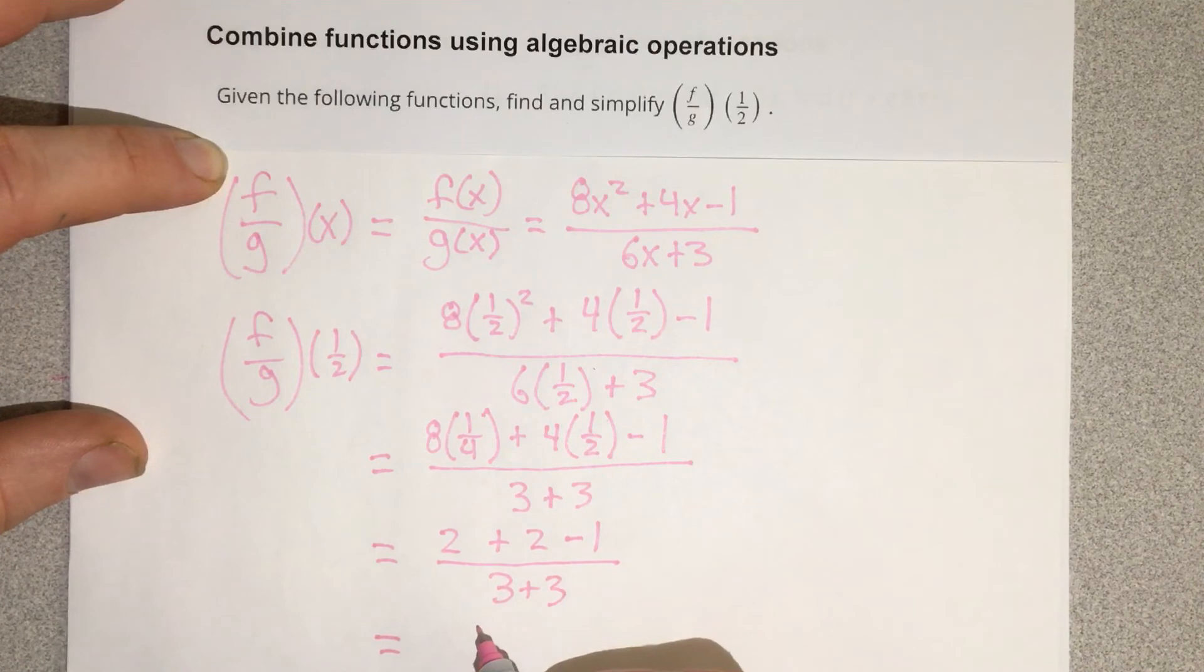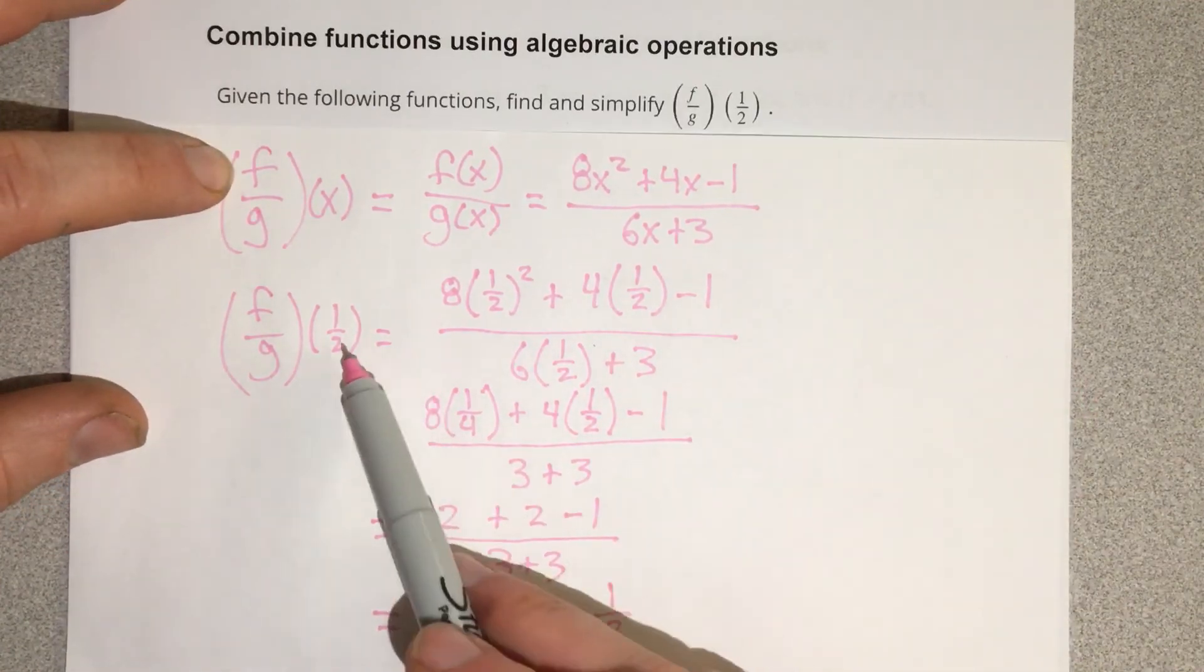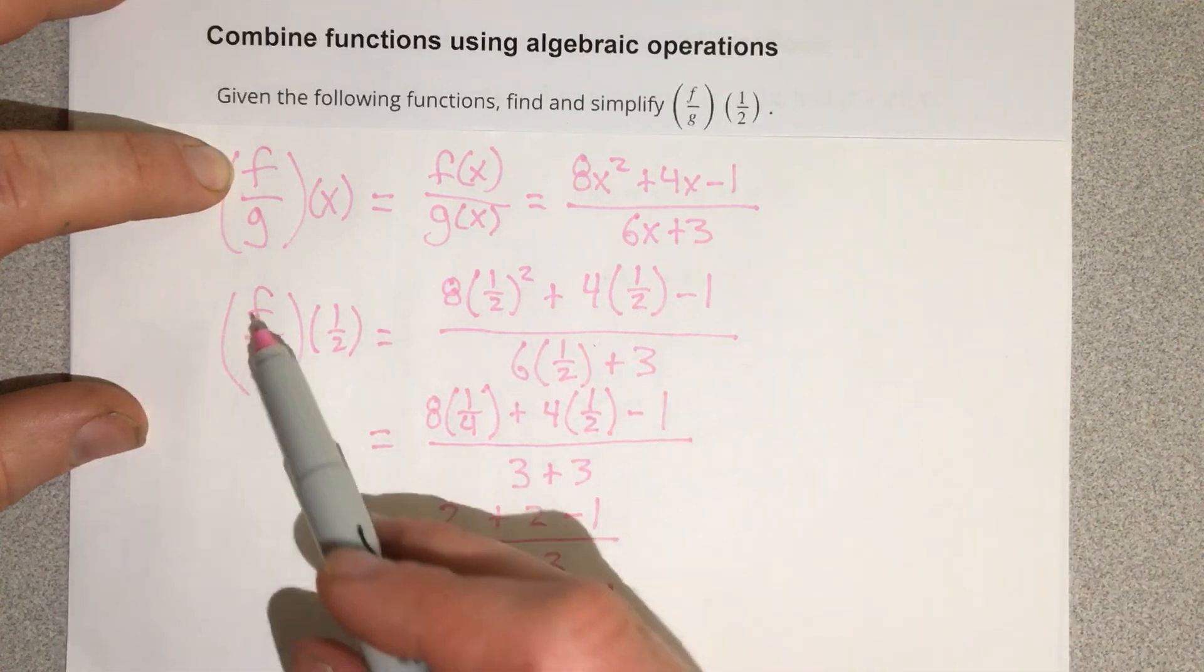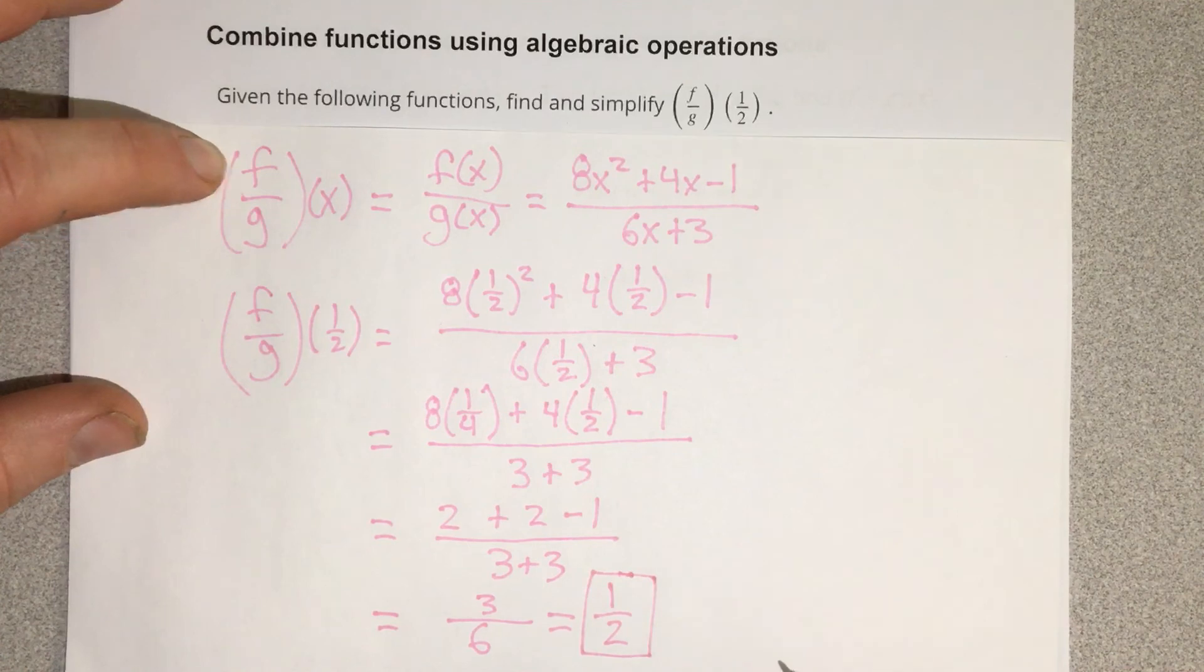2 plus 2 minus 1 is going to be 3 over 6, which reduces to one-half. So if you plug one-half into the function for f divided by g, you actually end up with one-half for your solution.